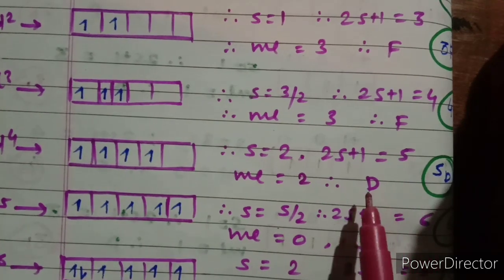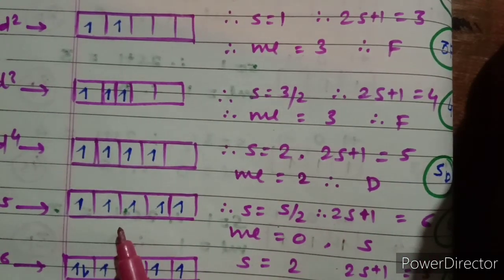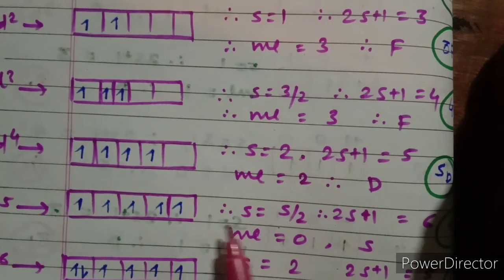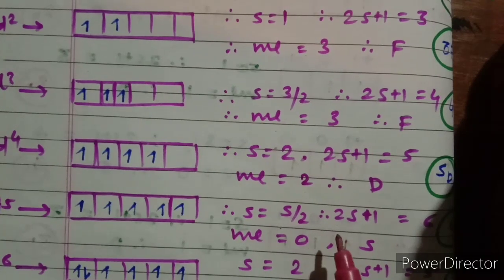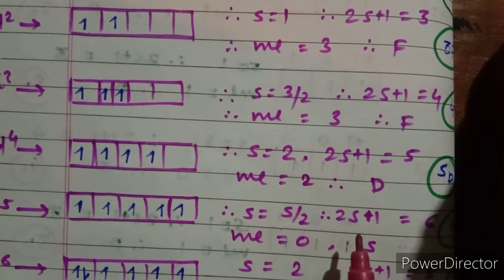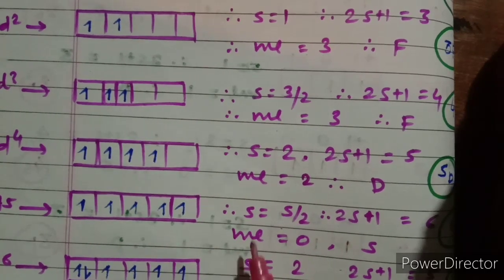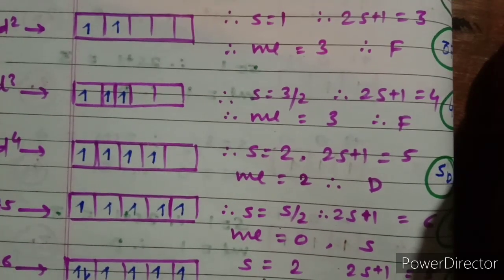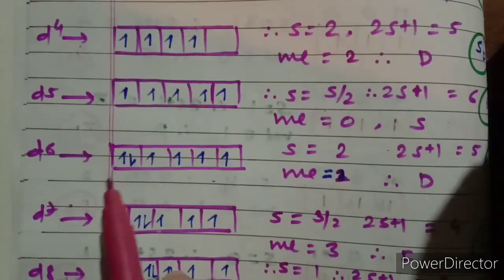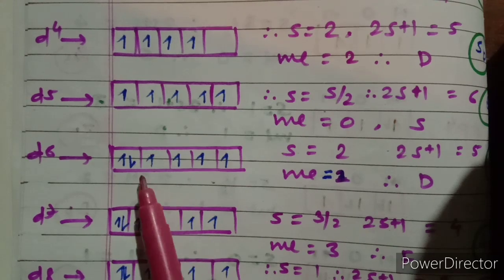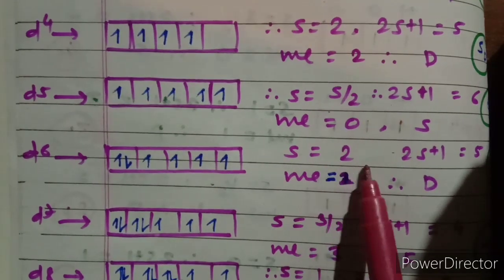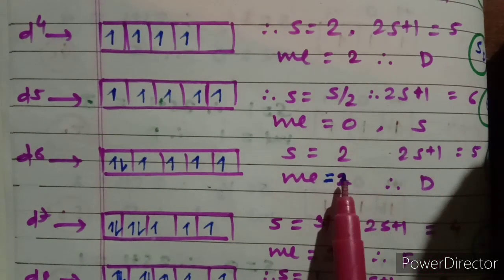For d5, all five electrons are arranged with spins parallel; S = 5/2, 2S+1 = 6, and all ml values sum to 0, giving term S. The term symbol is ⁶S. For d6, six electrons with one paired; S = 2, 2S+1 = 5, ml = 2 giving term D — so the term symbol is ⁵D.